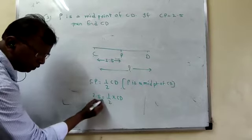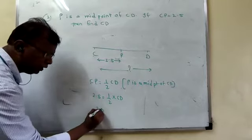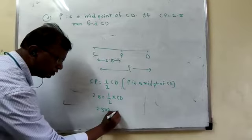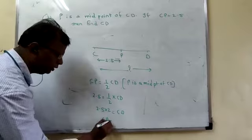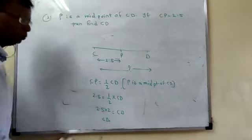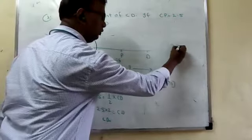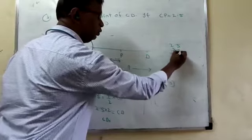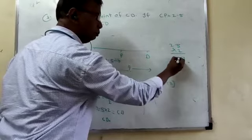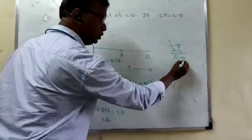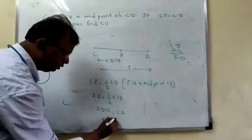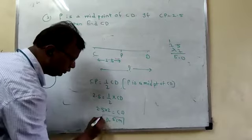2.5 is equal to half into CD. Cross multiply. This will go here. Therefore, 2.5 into 2 is equal to CD. Therefore, if you multiply 2.5 into 2, 2.5 into 2, point here, 1, 2, 2 is equal to 4, 5. What answer? 5.0. That is 5. 5 centimeter. You can write 5 units.